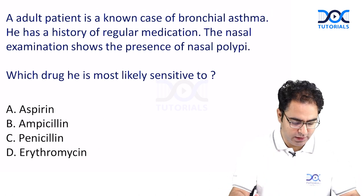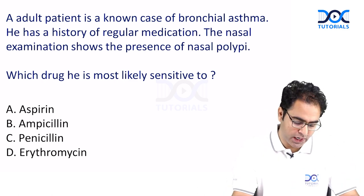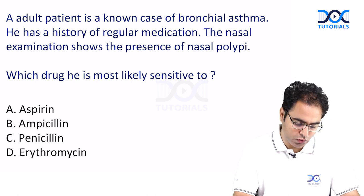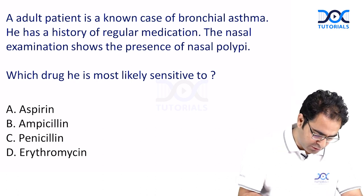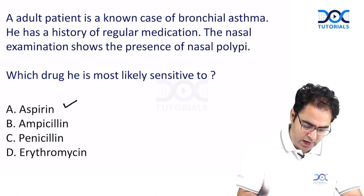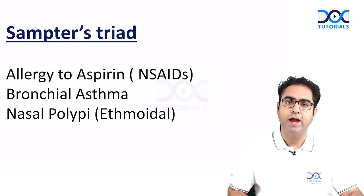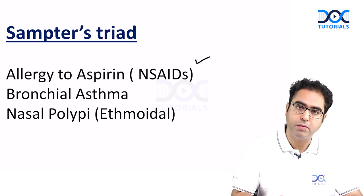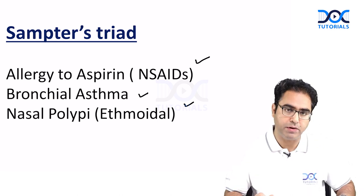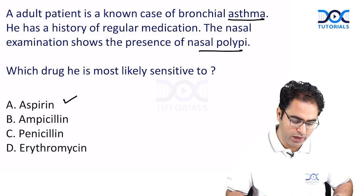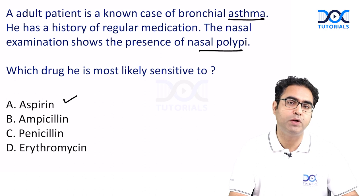The next question: an adult patient with a known profile of bronchial asthma, taking regular medications, has nasal examination showing nasal polypi. Which drug is this patient most likely sensitive or allergic to? The answer is aspirin. Asthma, nasal polyp — this is a classical case of Samter's triad. Samter's triad is allergy to aspirin or any other NSAID, asthma, and nasal polypi. So this is a classical case of Samter's triad presented as a story, with asthma in the profile and endoscopy showing nasal polyp. The drug sensitivity would be to aspirin.